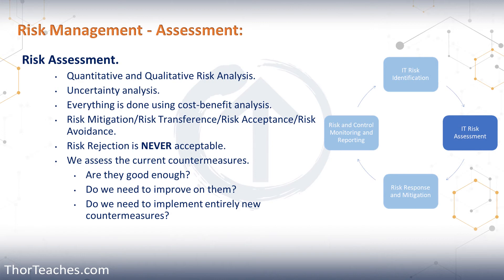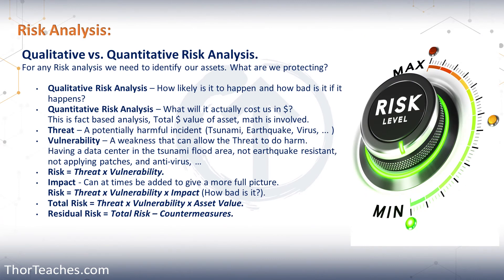So let's look at the actual risk analysis. Qualitative risk analysis is us sitting down and guessing how likely is this to happen, how bad is it when it does, and how exposed are we. It is vague, it is guessing, and it is pretty quick to do. We use this mostly to identify the areas where we want to do quantitative risk analysis. Remember, qualitative is about the quality of something — it's your opinion, not a specific number. That takes us to quantitative risk analysis, which is fact-based.